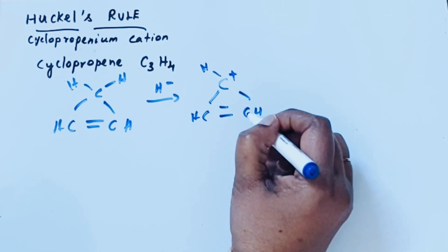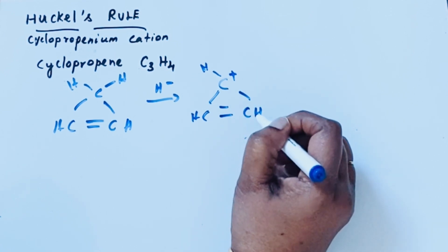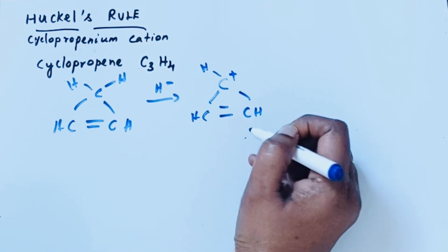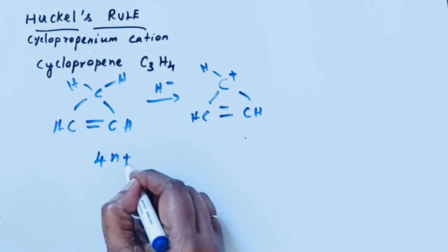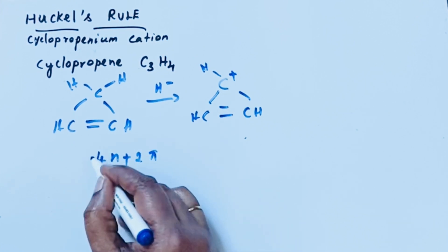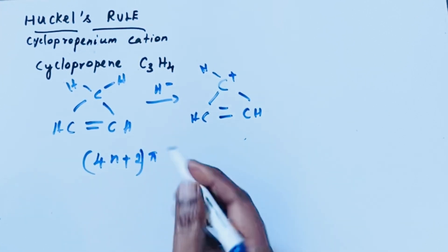So this compound is cyclic. Does it follow Huckel's rule or not? Let us see. According to Huckel's rule, if 4n plus 2 pi electrons are present, then the compound is aromatic.